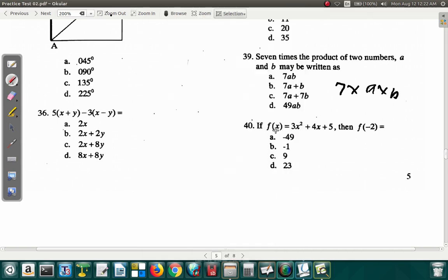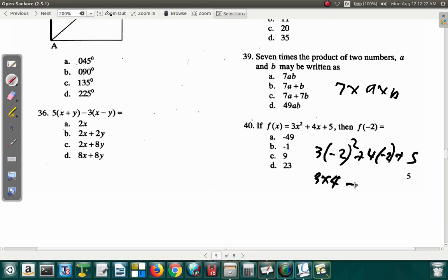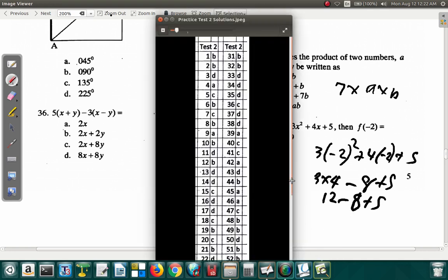If f(x) is 3x squared plus 4x plus 5, what is f of negative 2? That's 3 times negative 2 squared plus 4 times negative 2 plus 5. Negative 2 squared means negative 2 by negative 2. Negative by negative is positive. So this is 3 times positive 4, that's 12. 4 by negative 2 is negative 8 plus 5. 12 minus 8 is 4. 4 and 5 is 9. So 40 is C.